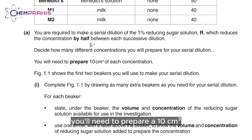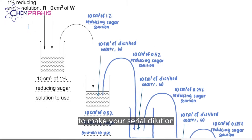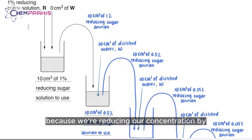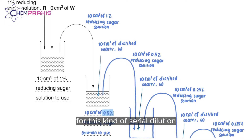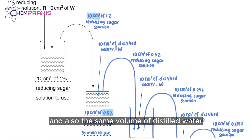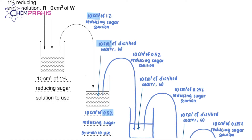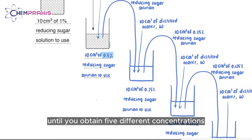You'll need to prepare 10 cm³ of each concentration. Figure 1.1 shows the first two beakers you'll use to make your serial dilution. Because we're reducing our concentration by half, our next beaker will have 0.5% reducing sugar solution. For this kind of serial dilution, we can add the same amount of reducing sugar solution from the previous beaker, and also the same volume of distilled water.